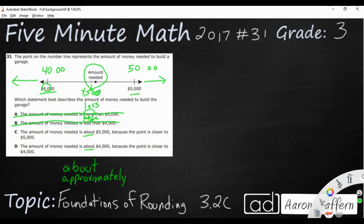Which one is this closer to? Well, the visual makes it pretty clear. This amount needed, which we don't know exactly, is closer to 5,000. The reason we know it's closer to 5,000 is because it's above the midpoint. Anything that's in the middle or above moves up.